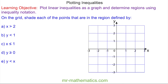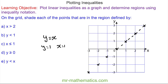And for question e, to plot the inequality y is less than x, I'm going to use the equation y is equal to x to understand where the line goes. You can see that when y is equal to 1, x will be equal to 1. When x equals 2, y equals 2. So we have a diagonal line shown by these points. And because it is not equal to, it will be a dashed line through these points. And this is y is less than x, so the y values must be less than the x values — so this is below the line.